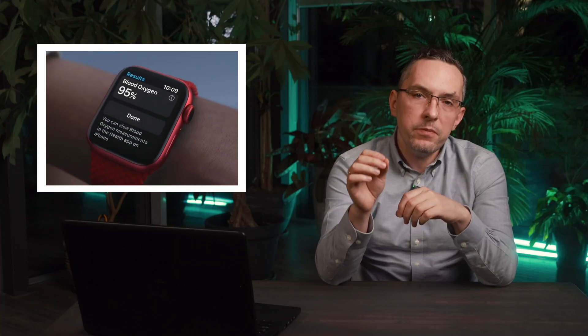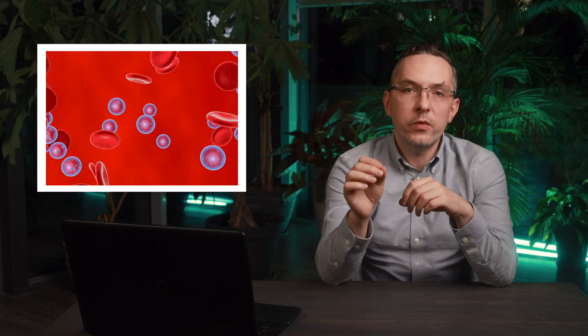If it reads 95%, it means that 95% of your hemoglobin is carrying oxygen, and 5% is, let's say, taking a break. For context, a normal blood oxygen level for a healthy person is 95% or higher. If the number drops below 94%, that's a cause for concern.